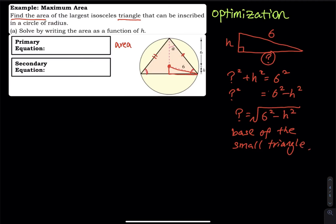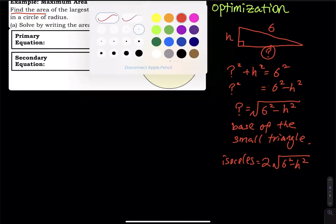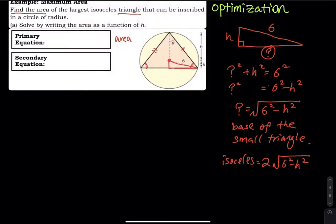What about the isosceles triangle? The full base will be two times the square root of six squared minus H squared — that is the base of the big triangle. What about the height? From the center to the edge of the triangle is also six, so the height will be six plus H.